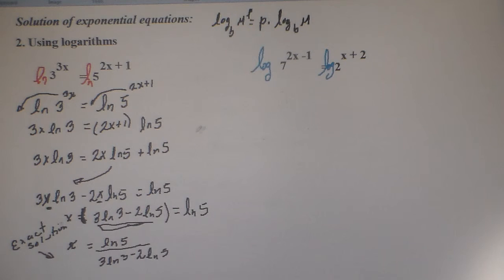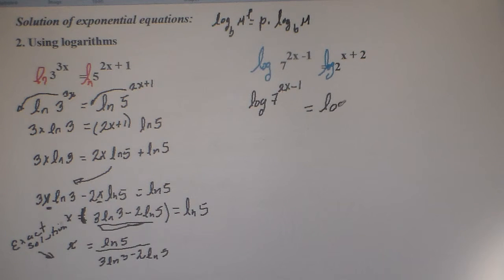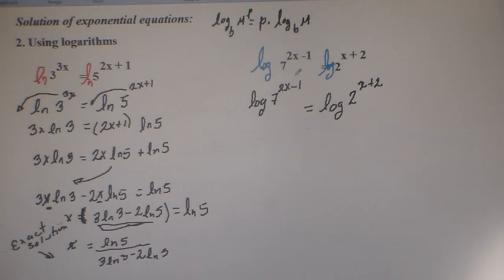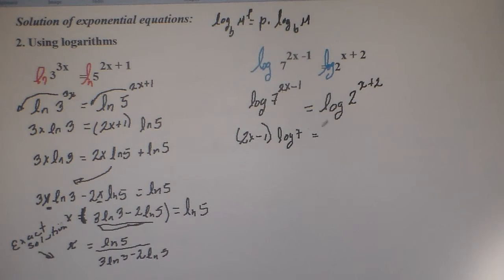When we apply logarithms on both sides, we get the logarithm of 7 to the power of 2x minus 1 equals the logarithm of 2 to the power of x plus 2. Remember that common logarithms is logarithm base 10. We bring 2x minus 1 and x plus 2 to the front of the logarithms, multiplying, using the power as a factor property. Then we get 2x minus 1 in parentheses, because it's a binomial, times the logarithm of 7 equals x plus 2 in parentheses, because it's a binomial, times the common logarithm of 2.